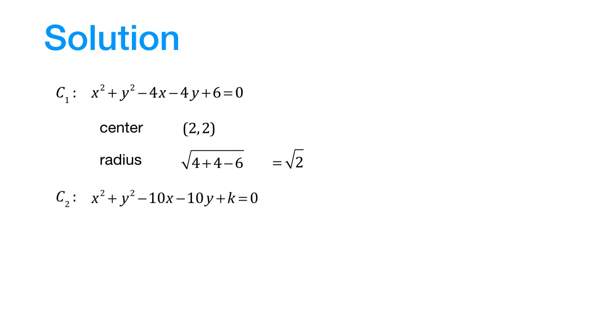Let us write down the equation of the second circle. The center for this circle would be at the point (5, 5) and its radius would be equal to the square root of 25 plus 25 minus k, which is equal to the square root of 50 minus k. The radius of the second circle is in terms of k.